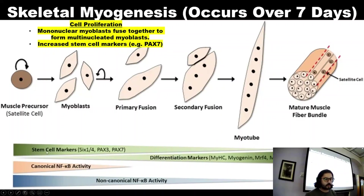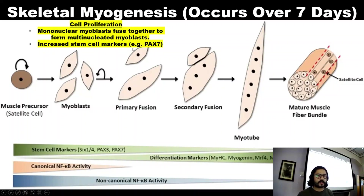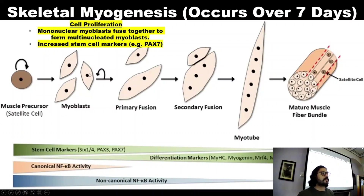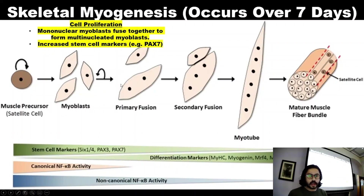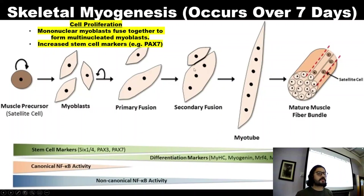At the same time, this process is facilitated by stem cell markers — markers in the body which encourage the process to happen. One of the key ones is Pax7; we also have Pax3 and S6-1-4. We get cell proliferation, with myoblasts being fused together in what is called the primary fusion step, facilitated by Pax7. As the days progress and the immune process continues, we then get what is called secondary fusion.